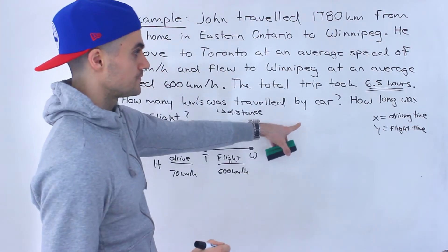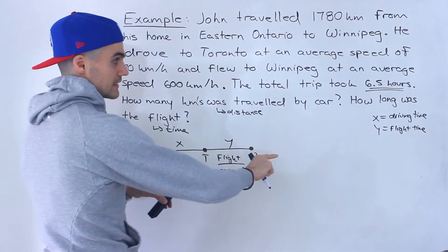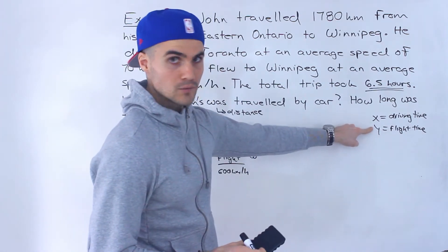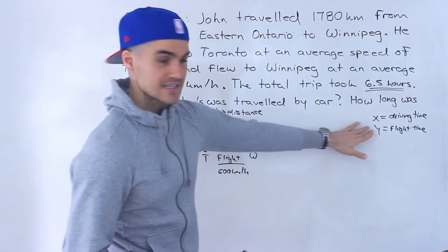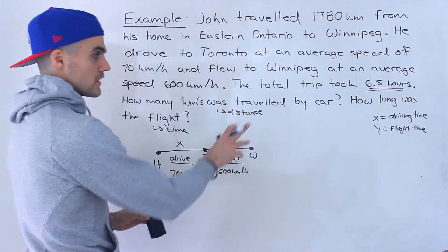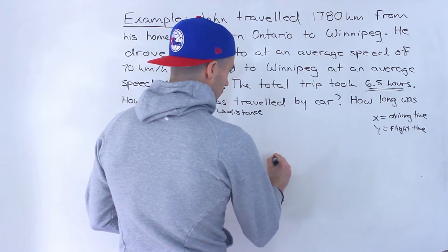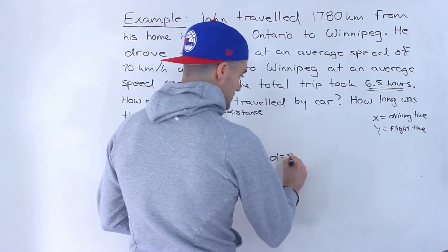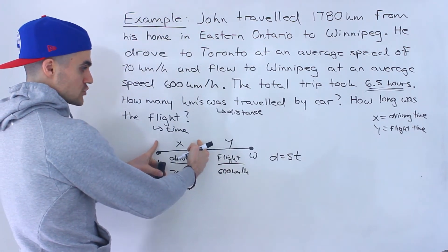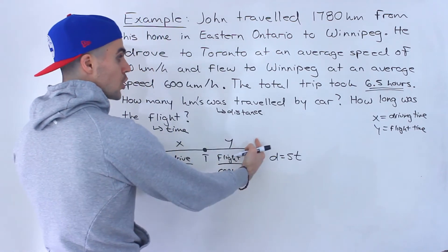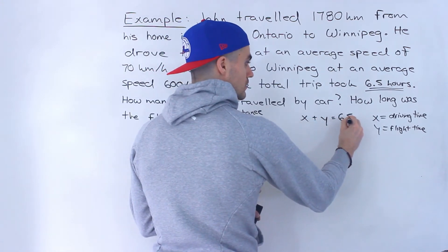If x is the driving time and y is the flying time, then the answer we solve for with y is actually the answer to the second question — how long was the flight, which is the same as the flight time. We know in general that distance equals speed times time. So since the total time of the trip was six and a half hours, we know that x plus y equals 6.5.